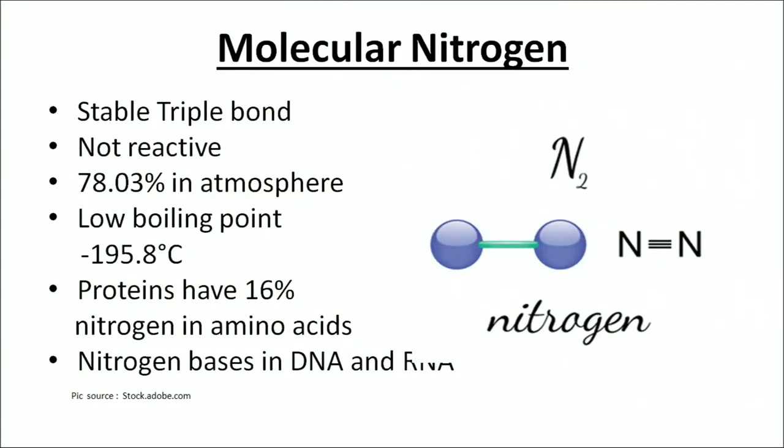We will first start with a description of the nitrogen molecule. As shown in the picture, the nitrogen molecule is made up of two atoms bonded by a stable triple bond, and hence it is not reactive. The percentage of nitrogen in the atmosphere is 78.03% and it has a low boiling point of minus 195.8 degrees centigrade. The two chief molecules in every living cell — proteins and nucleic acids — contain nitrogen. Proteins have 16% nitrogen, and there are nitrogen bases in DNA and RNA.